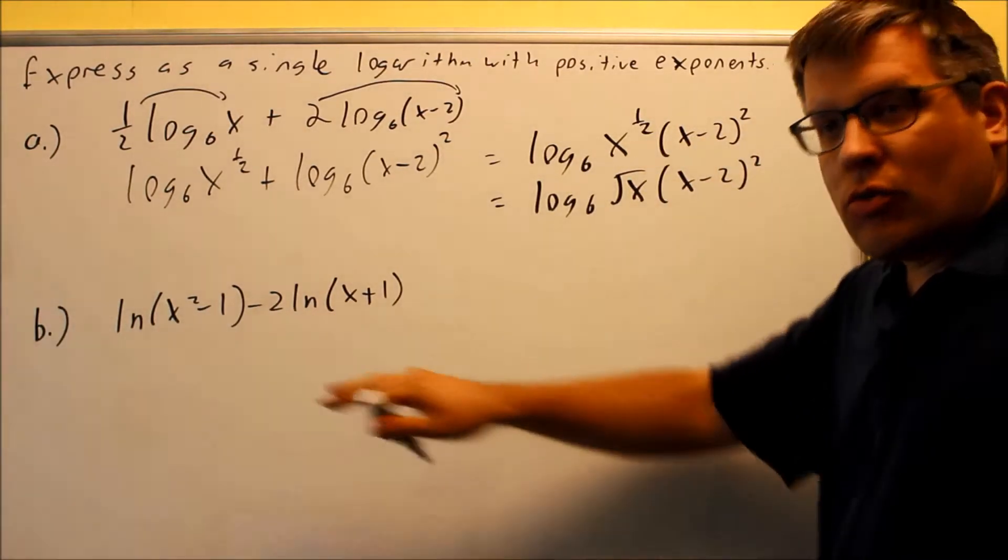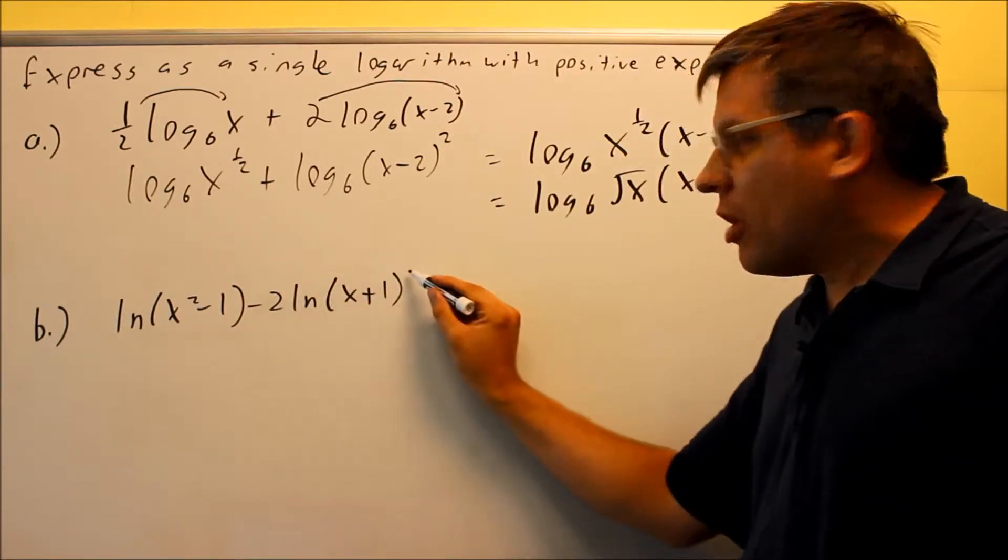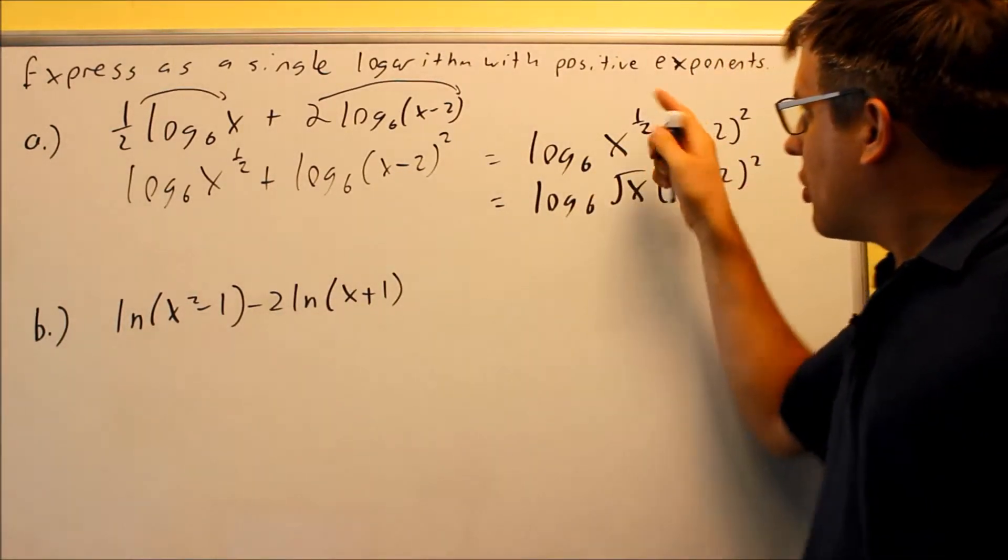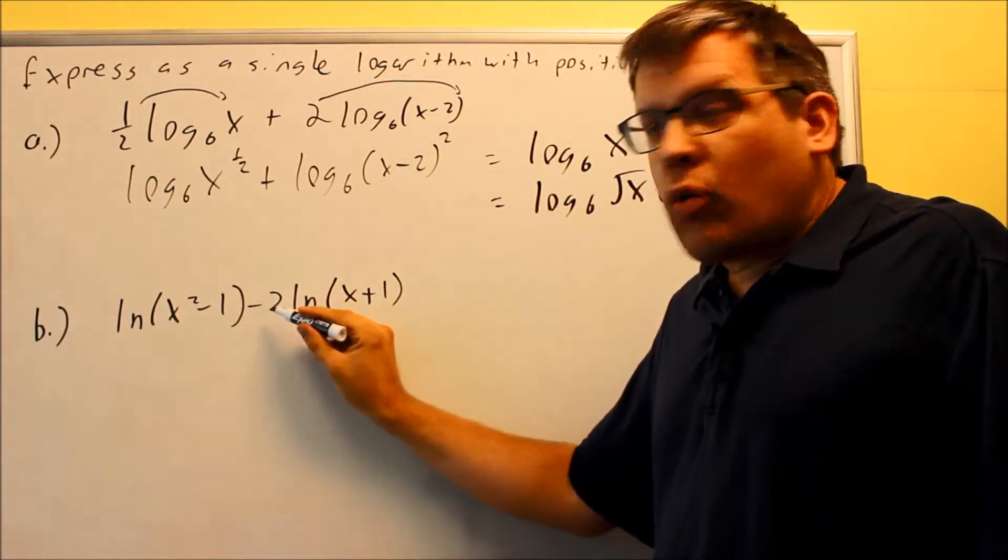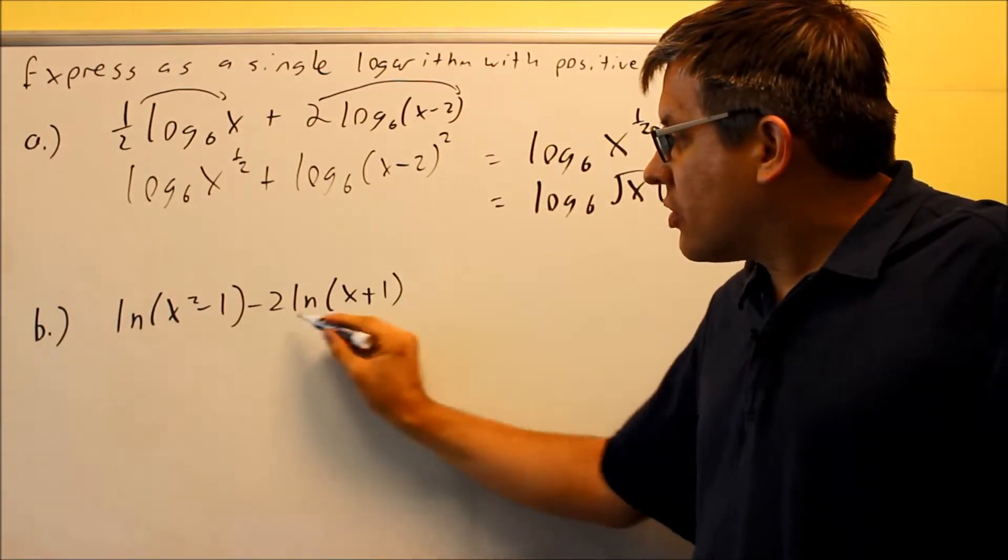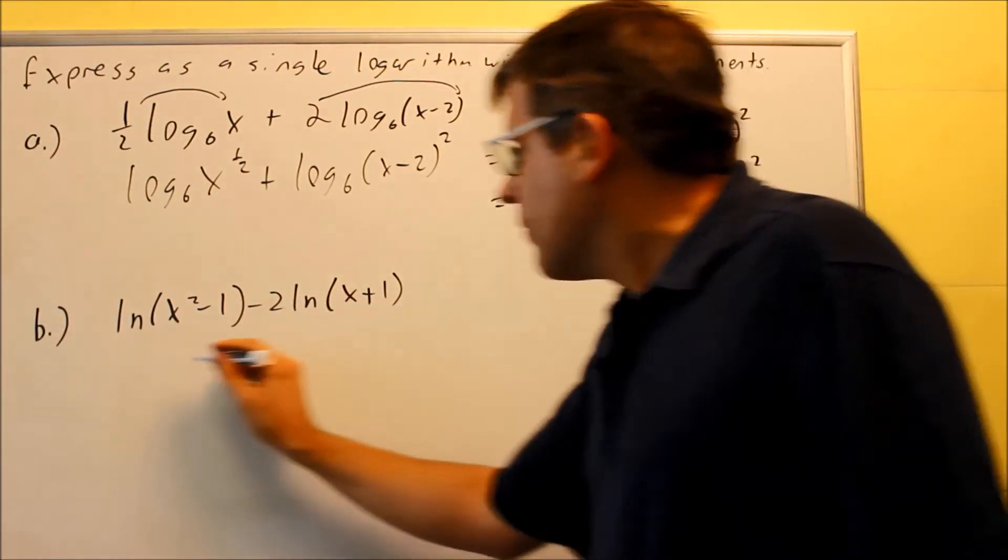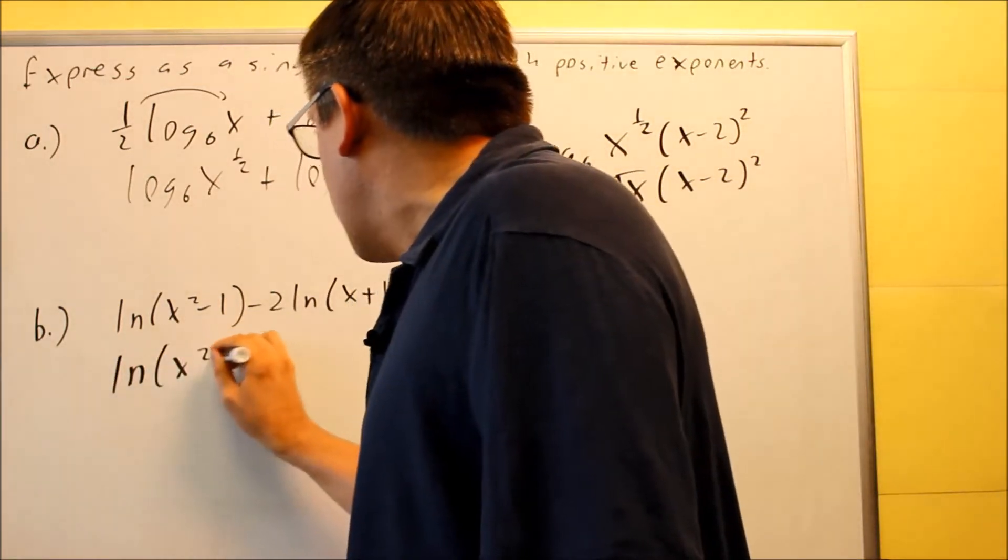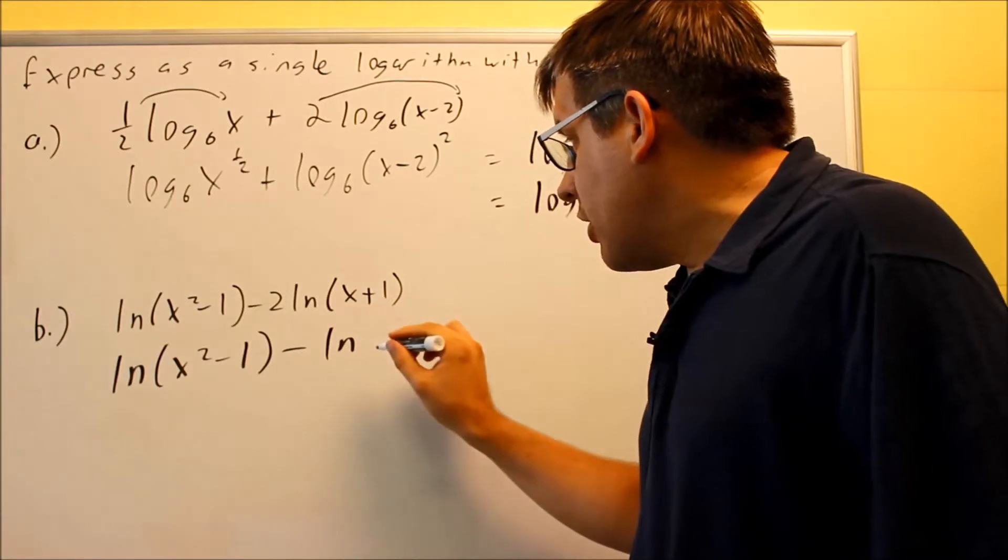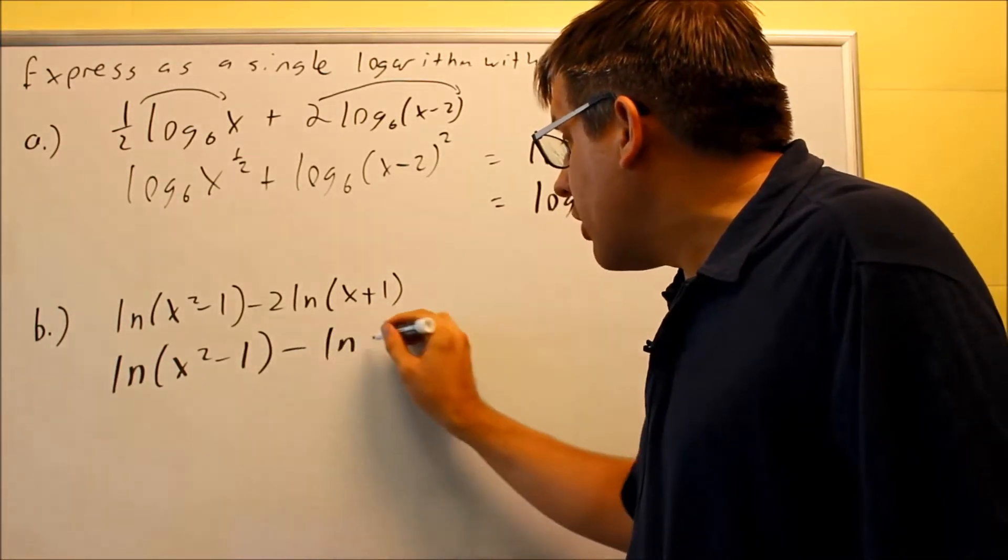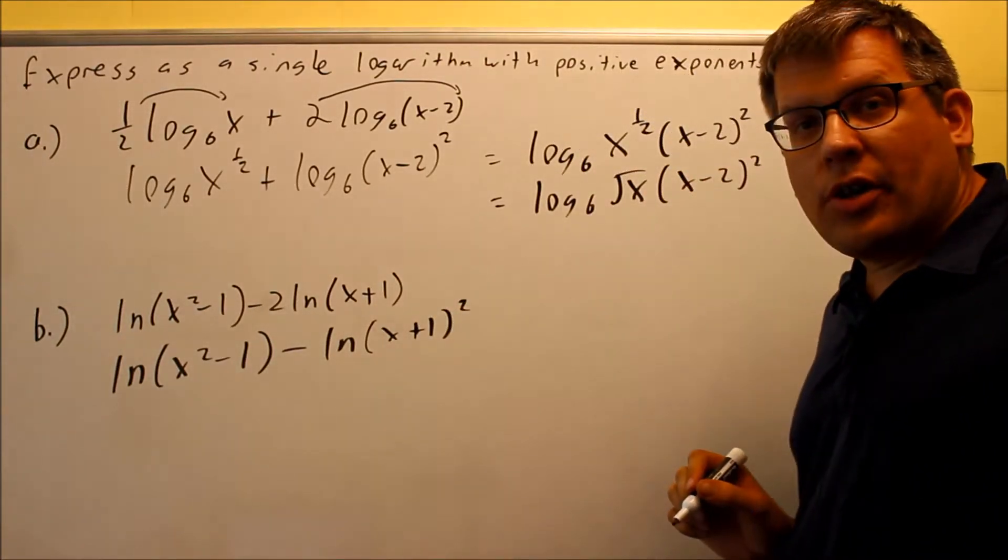Now we're ready to try the second one. So the second one again, there's a 2 that's here, and that 2 we're going to move up on top. Now because it says write with positive exponents, even though that's a negative 2 there, I don't want to take negative 2 and bring all that up on top. What I'm going to do is leave the negative in front of it, and just move the 2 up there only. So this would be ln x squared minus 1, minus, I'm not going to take the negative with it, I'm just going to leave the negative here, and that would be a 2 that would be brought up on top there.